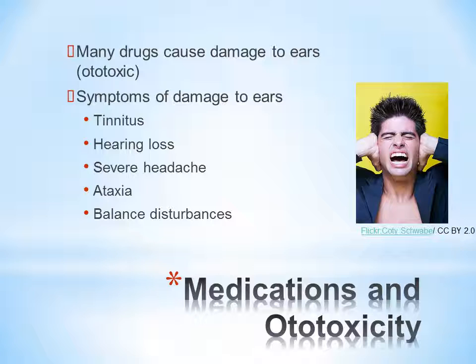Ototoxicity typically happens when the inner ear is poisoned by medication, causing structural or nerve damage in the inner ear. Drugs known to cause temporary damage include salicylate pain relievers like aspirin. Ototoxic medications known to cause permanent damage include aminoglycoside antibiotics such as gentamicin. The first symptom is usually tinnitus, or ringing in the ear, and there can be hearing loss.